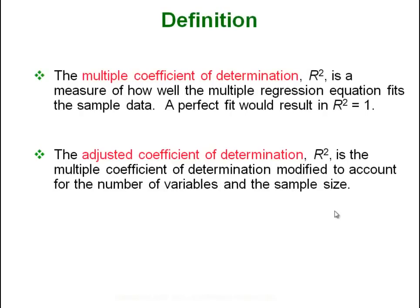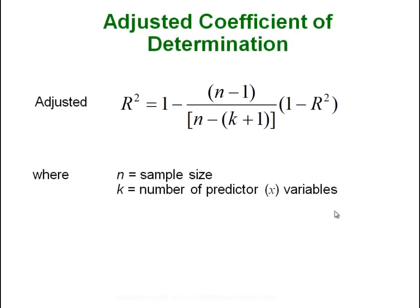The multiple coefficient of determination is just what we call the coefficient of determination when we have multiple inputs—it's how well the equation fits the sample data. The adjusted coefficient of determination is the multiple coefficient of determination modified to account for the number of variables and the sample size. It's an adjustment done to give us a more accurate result. This is the formula for doing the adjusting if you ever had to do it by hand.